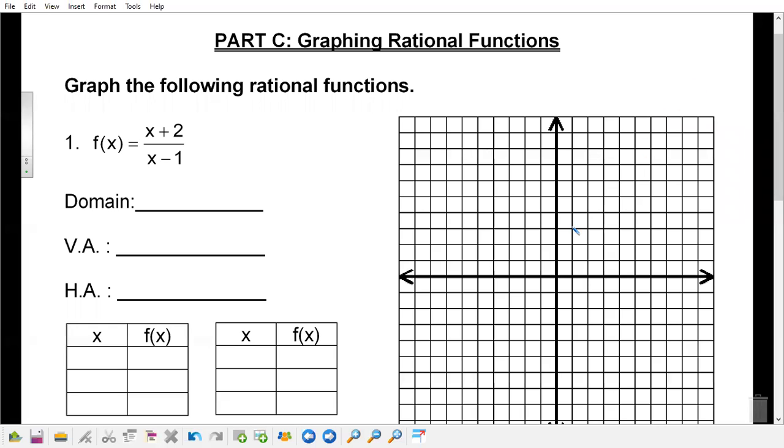All right, 11 part C of 11.3 is graphing rational functions. If we want to graph the rational function, it's important that you know what the domain and range are, and then know where your asymptotes are located.